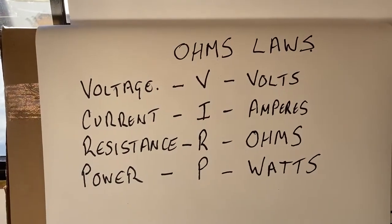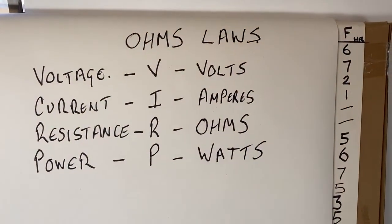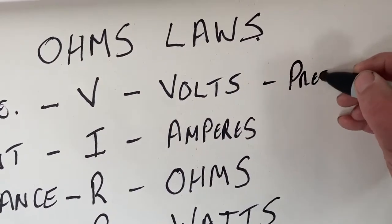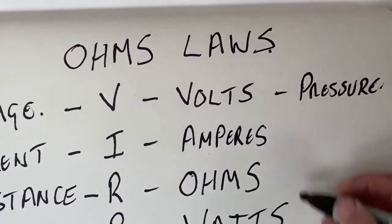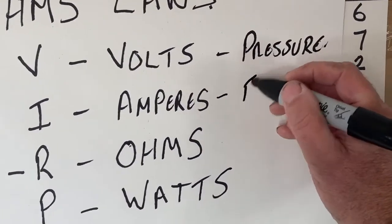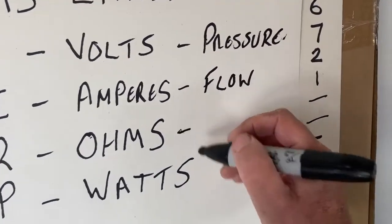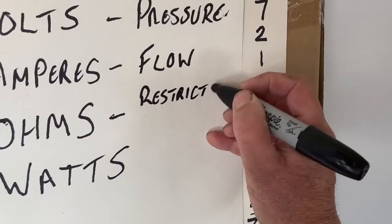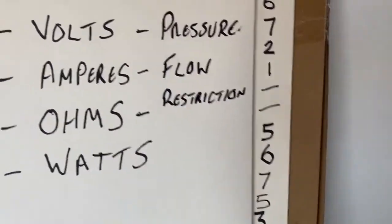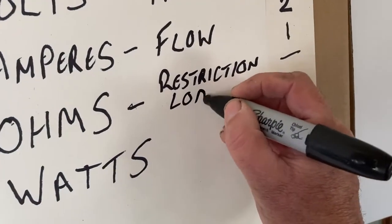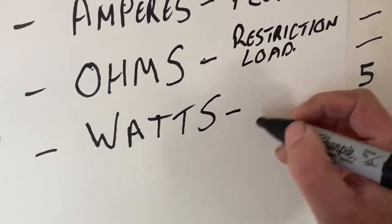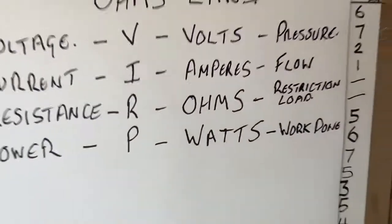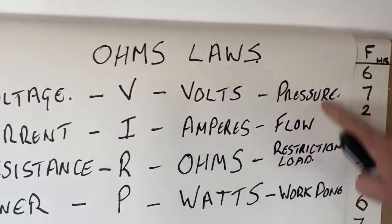To explain this a little further, if we think of water: volts is like pressure - think of pressure in a hosepipe pushing water through. Amps is the flow in a pipe. Resistance could be a restriction - or a load. And watts is actually work done. Thinking of water for these concepts might help the understanding a little bit.